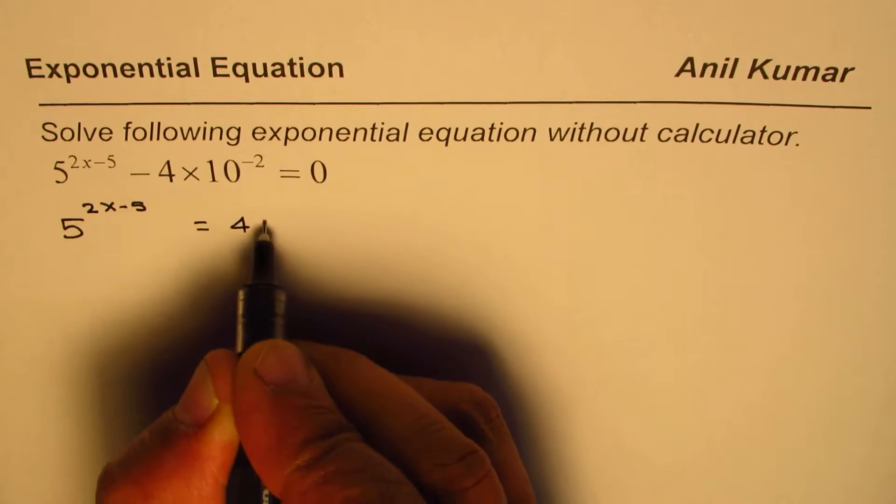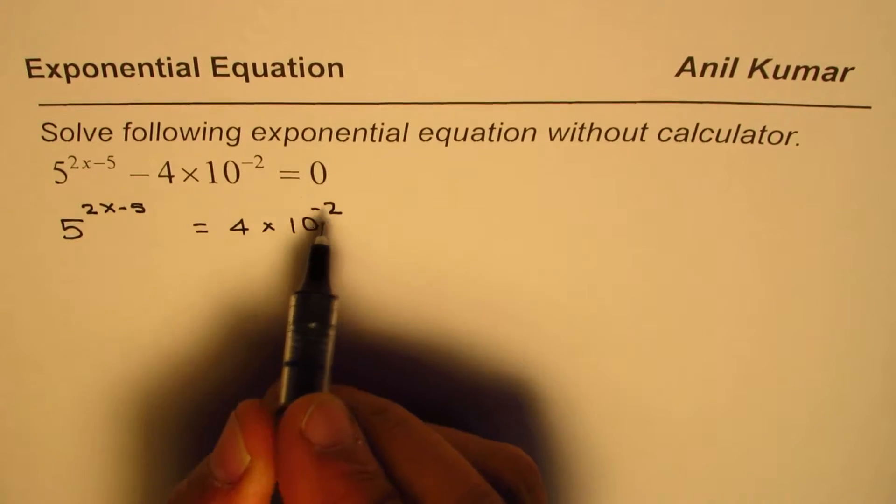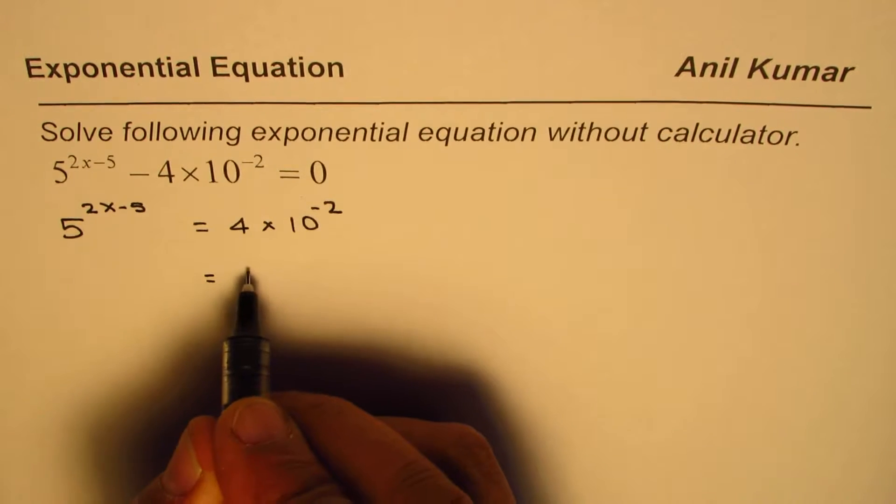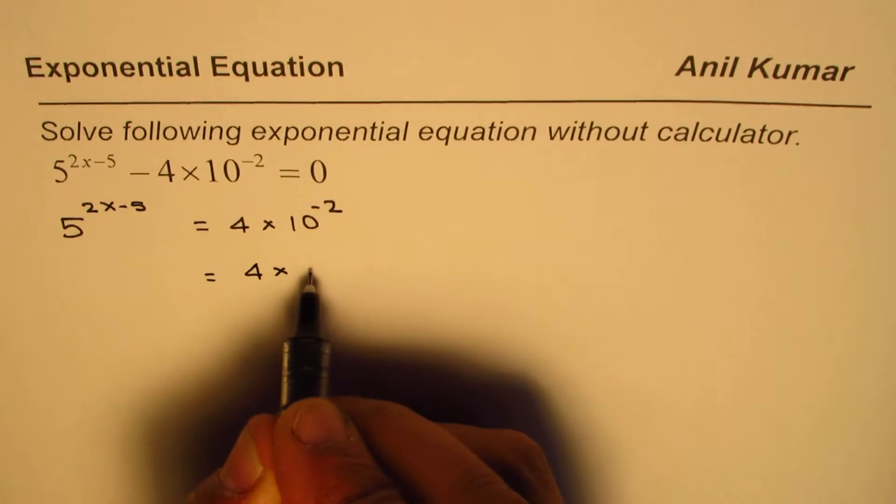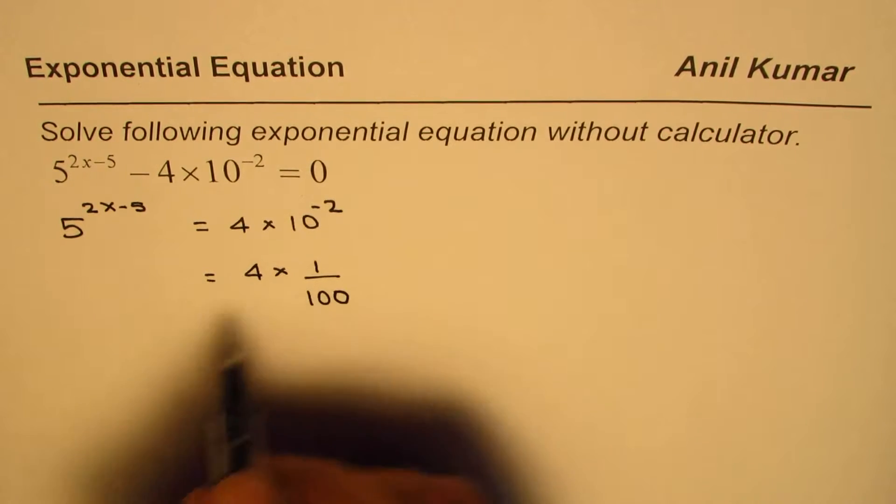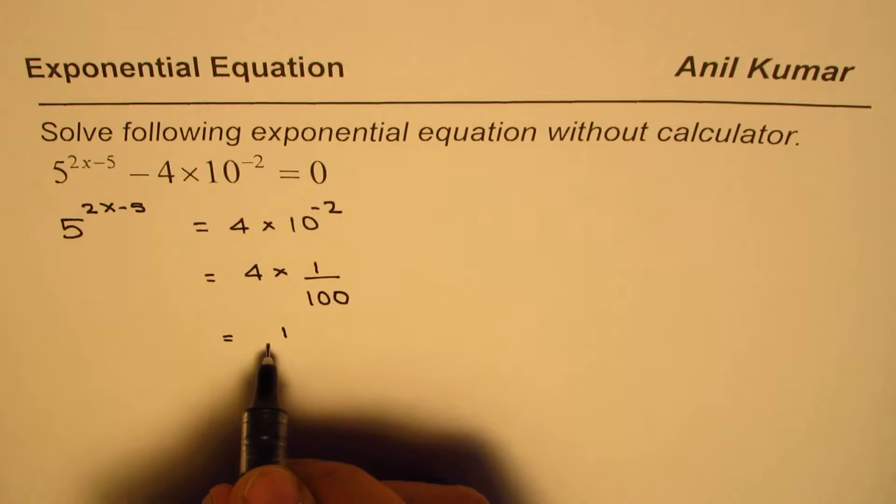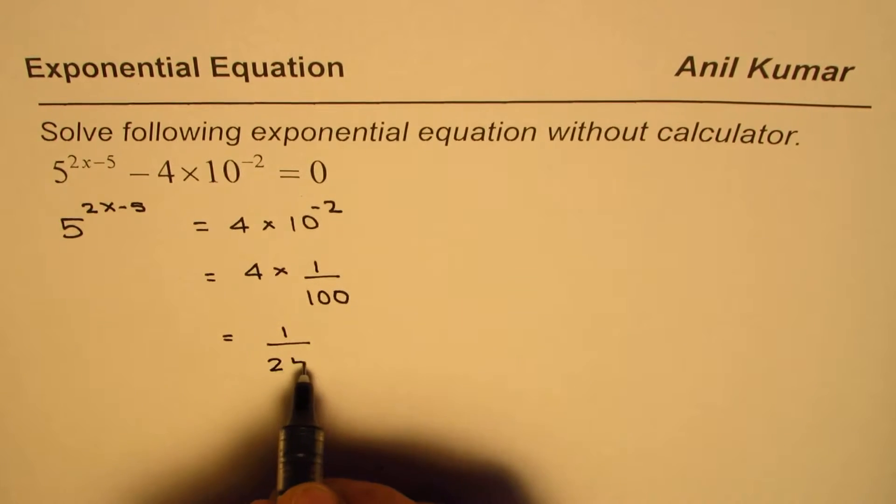Now, 4×10^(-2) really means 4 times 1/100, right? 10 squared is 100, so 1 over 100. And 4 divided by 100 is 1/25. Correct.